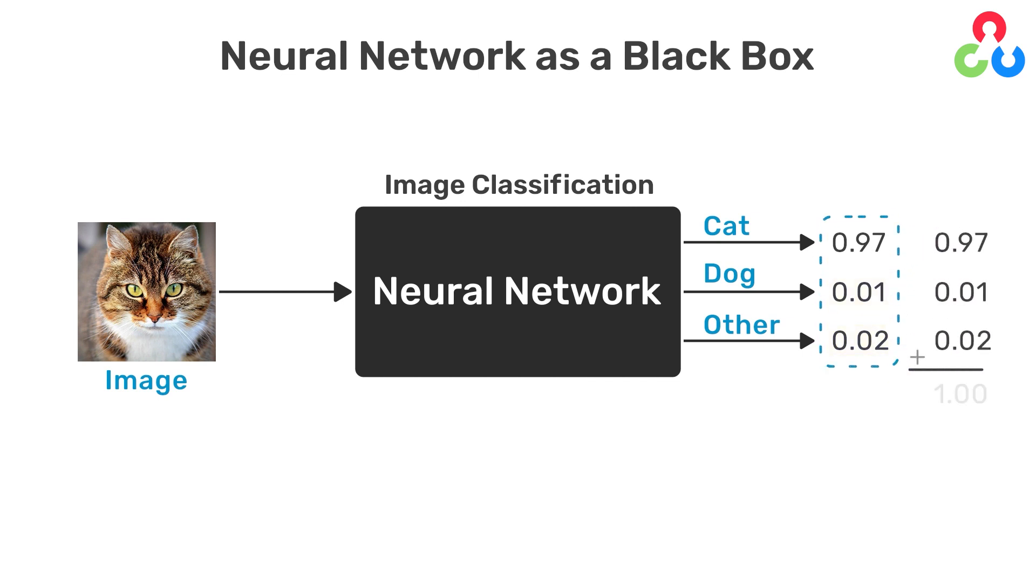Notice that the three outputs sum to one since they represent probabilities. Since the first output has the highest probability, we say the network predicted the input image to be a cat. More generally, the label assigned to the input image is computed by selecting the label associated with the maximum probability from the three outputs.